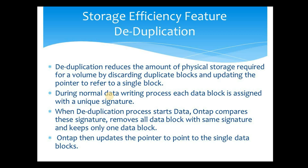During the normal data writing process, each data block is assigned a unique signature. The attachment is broken into many data blocks and each data block is stored on disk with a unique signature. When the deduplication process starts, Data ONTAP compares these signatures, removes all data blocks with the same signature, keeps only one data block, and then updates the pointer to point to that single data block instead of multiple blocks for the same data.